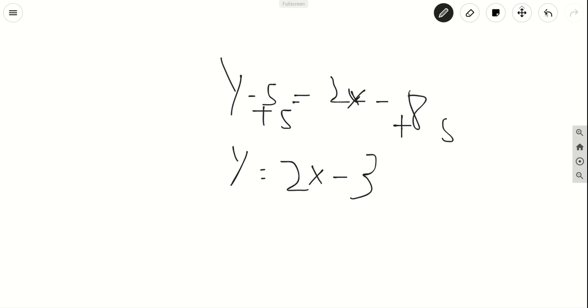That's how you do it if they give you a point and the slope. Here's how to do it if they give you only 2 points.